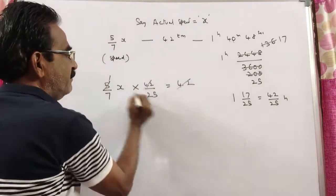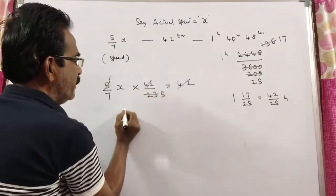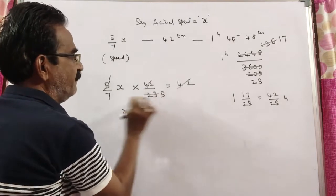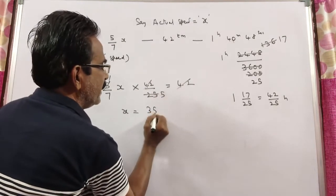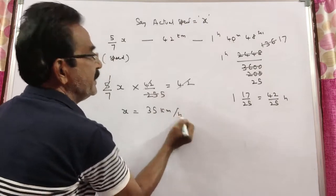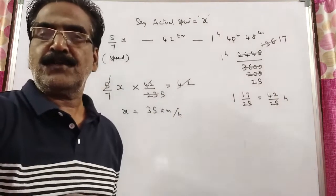42 cancels, 5 cancels. So x equals 7 times 5, which gives 35 km per hour as your answer. Friends, thank you. Have a nice day.